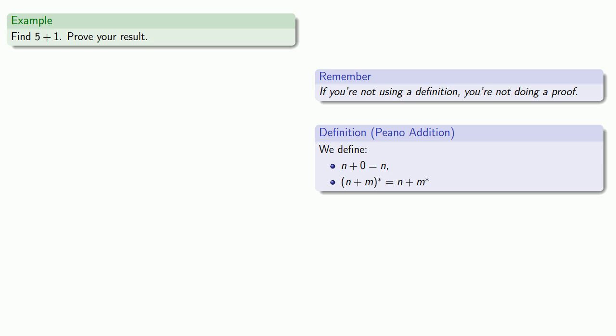And since our definition of addition refers to the successors of the natural numbers, we might remember how we define those successors. So, by definition, 5 plus 1...